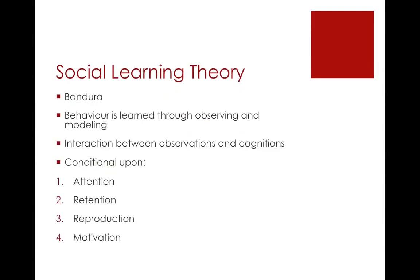The social learning theory was pioneered by Bandura. Behavior is learned through observing and modeling, and interactions must be observable and involve cognitions. Learning is conditional upon attention — the individual must be paying attention to features being modeled. They must be able to retain the information, they must be able to reproduce the behavior, and there must be an incentive or motivation. For example, you could think about times where you modeled your parents' behavior, such as pretending to mow the lawn or playing with a toy car — you were modeling that behavior.